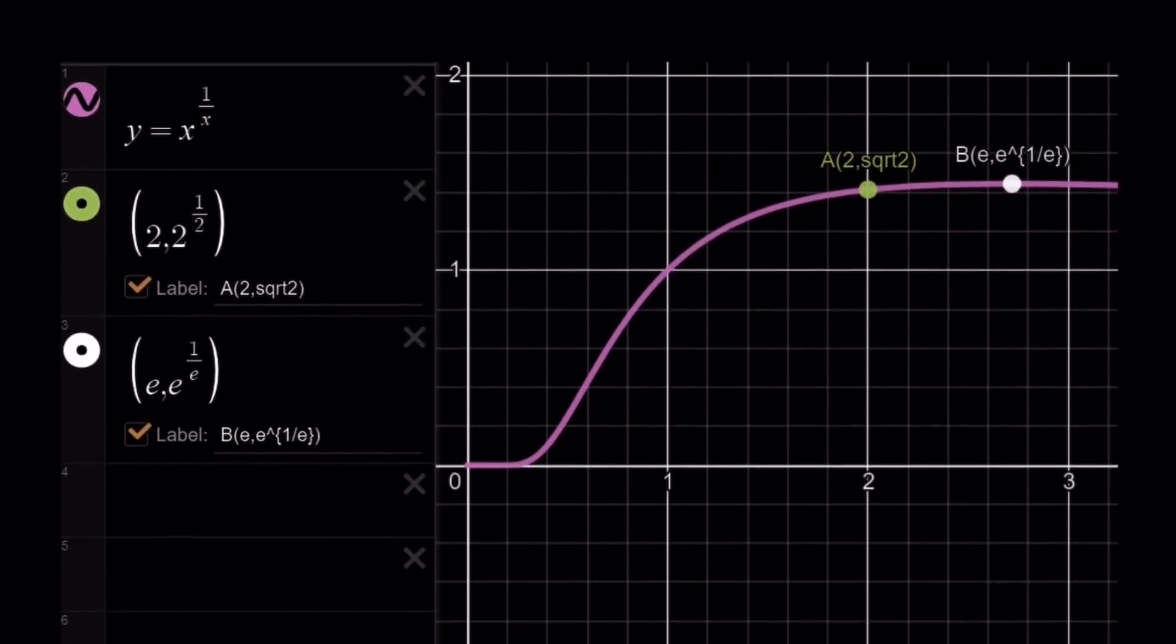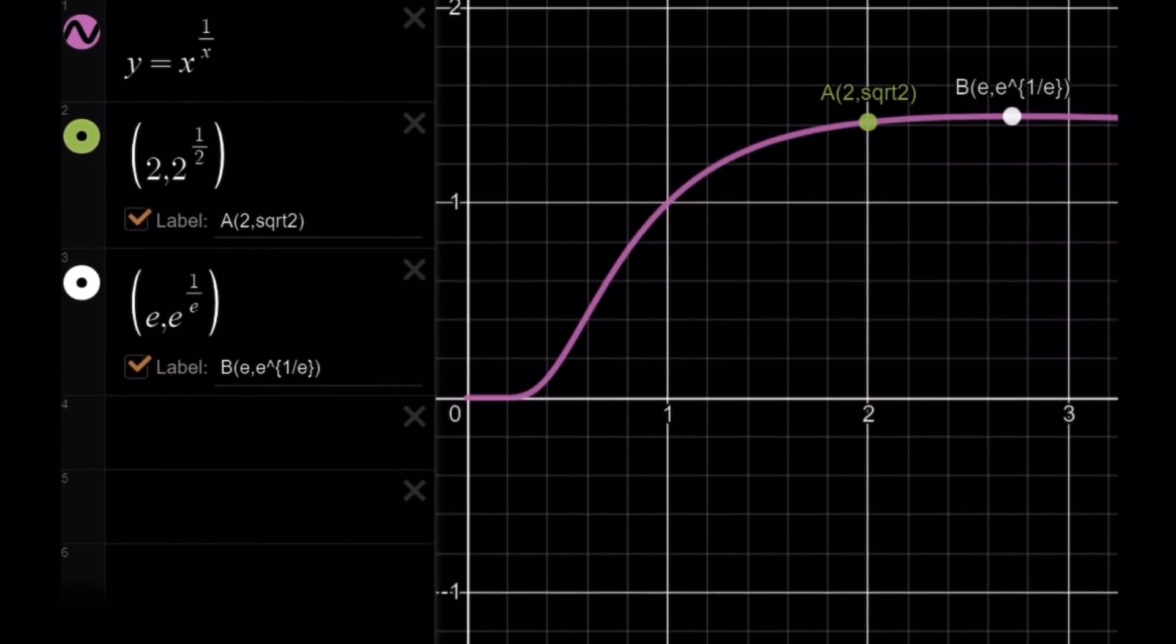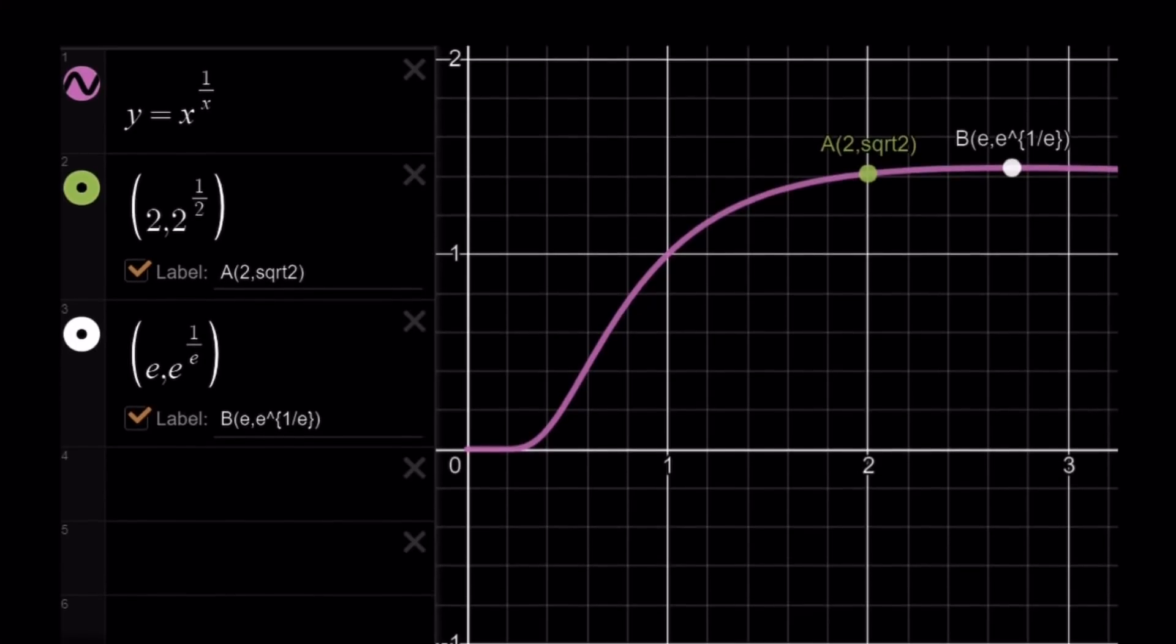So, here, here's the graph of y equals x to the power of 1 over x. And here, you can see that our function is increasing for x values that are less than e.